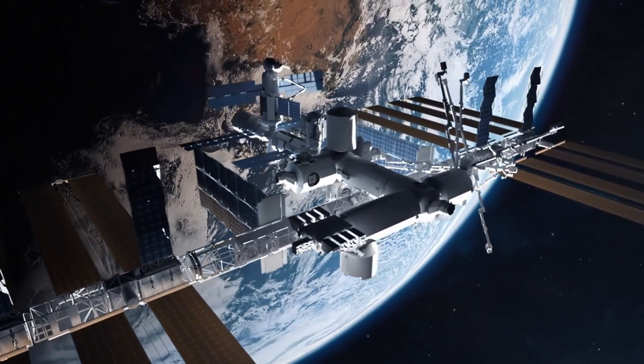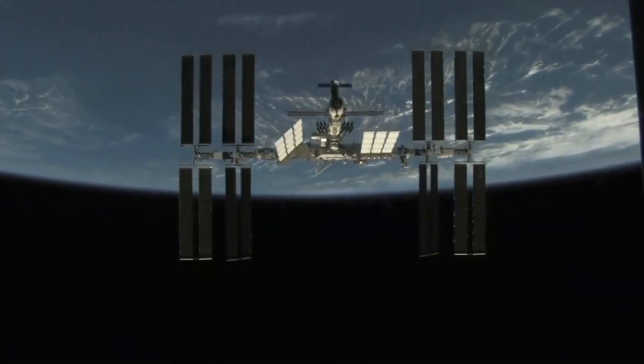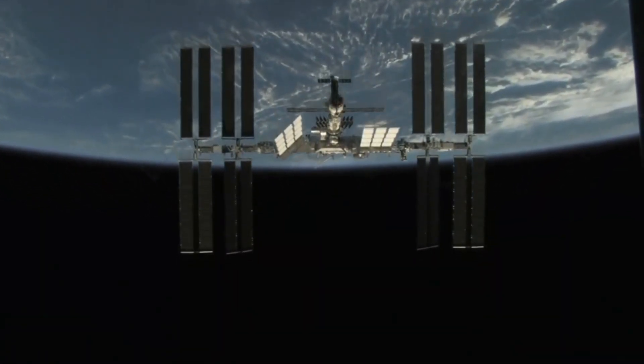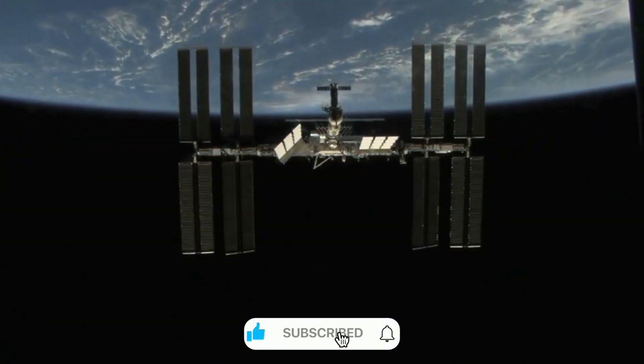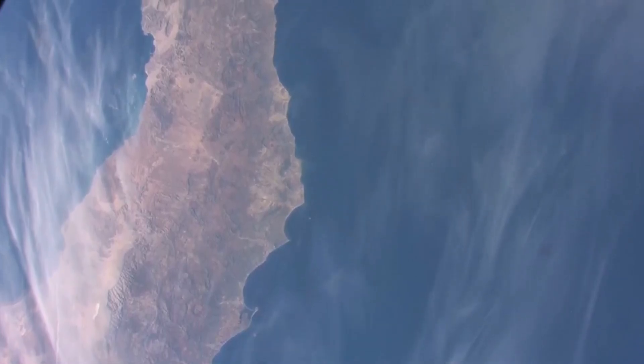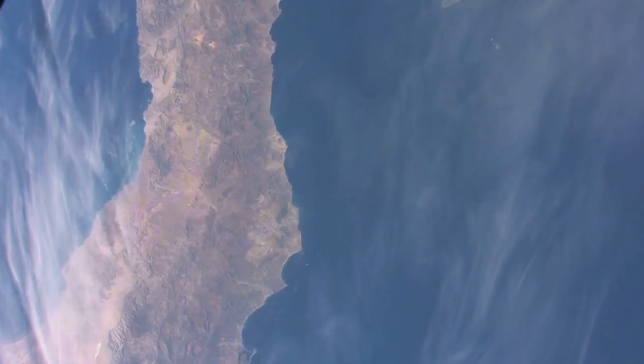The International Space Station isn't just a scientific laboratory. It's a carefully balanced ecosystem where every supply, every docking port, and every crew rotation must be precisely timed. When one piece of this complex puzzle shifts, it creates a ripple effect that touches everything else.